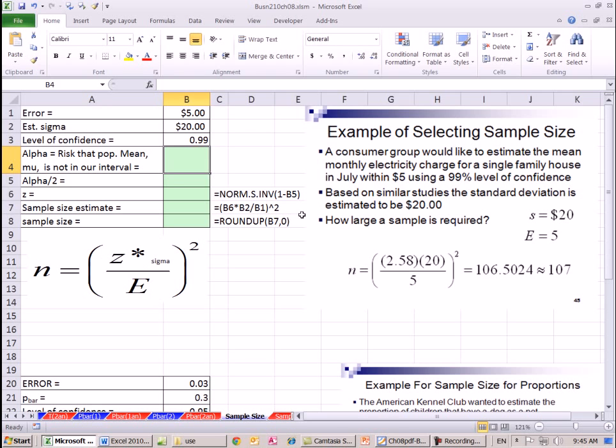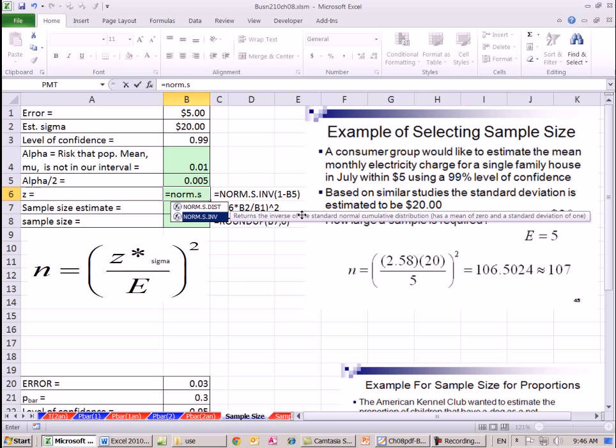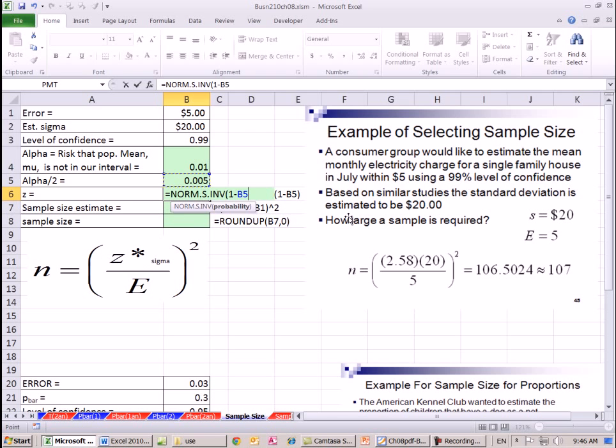We'll calculate our alpha equals 1 minus this. That's the total risk. We've got to calculate the alpha on the upper end so we can calculate our z on the upper end. So we'll take that alpha divided by 2. Use our norm.s.inverse probability, 1 minus. We have our z.